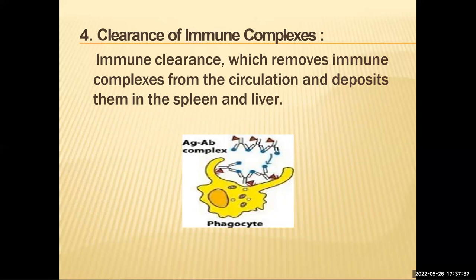Another role is clearance. The complement system removes immune complexes from the circulation and deposits them in the spleen and liver. This is one way the homeostatic environment is maintained as it relates to the destruction of pathogens — even though destruction is occurring, the removal of complexes must also be facilitated, and this is done by the complement system.